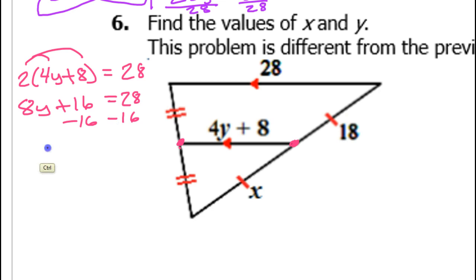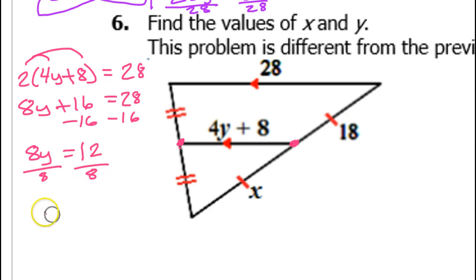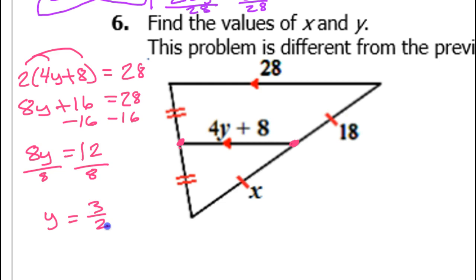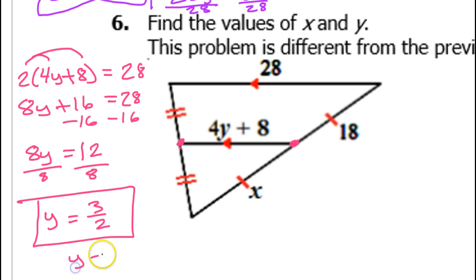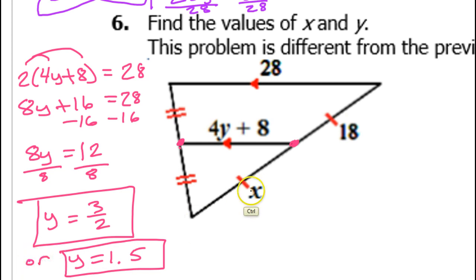Subtracting 16 gives 8y equals 12. Dividing both sides by 8 — both are divisible by 4 — gives y equals 3 over 2, or 1.5 as a decimal.